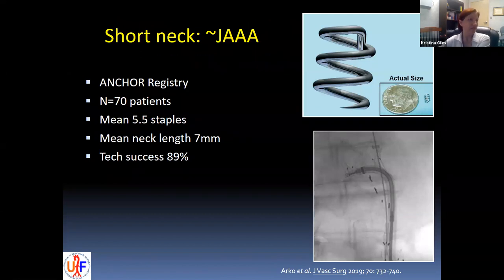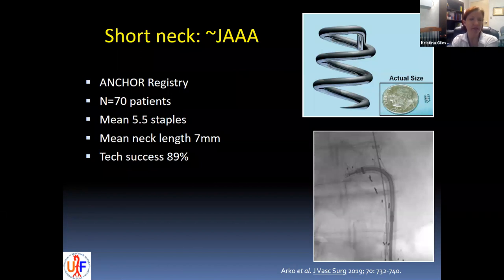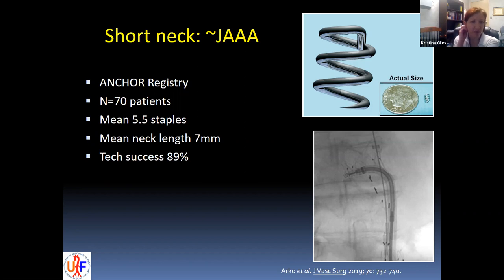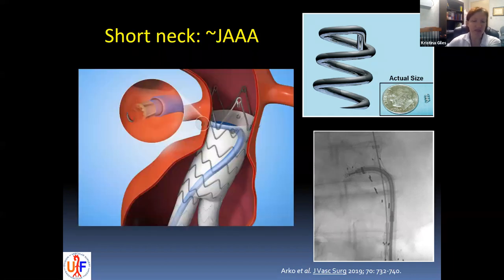Along with angulated necks, you have to talk about short necks — and once you get to a short neck, you're really almost talking about juxtarenal AAAs. The Medtronic Heli-FX endo anchors registry showed that this works pretty well, allowing them to decrease the neck length requirement for their IFU. Technical success in the registry was 89%, using an average of five and a half staples with a mean neck length of seven millimeters. This is showing that devices are starting to bridge the gap and push the limits.